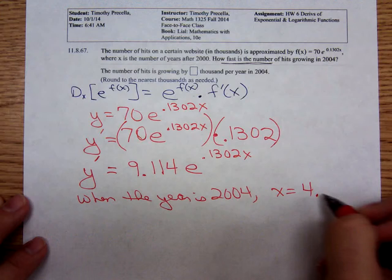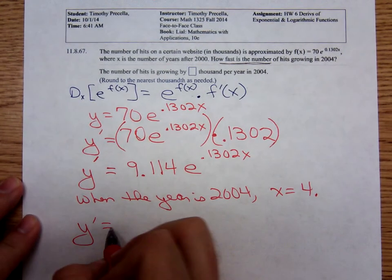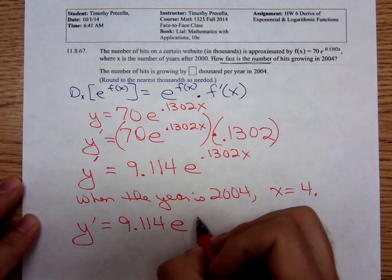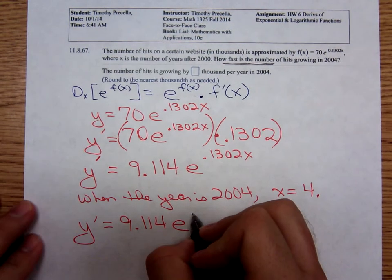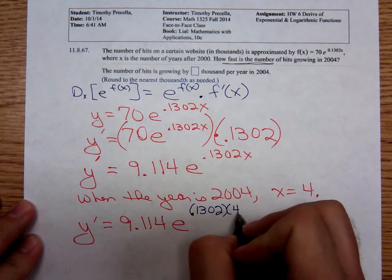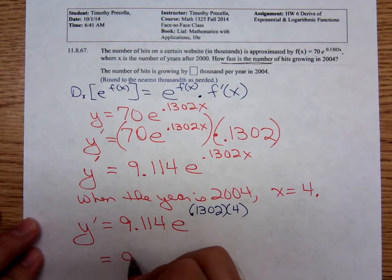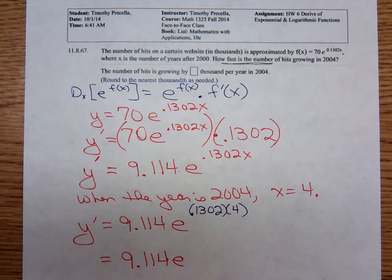Plugging in 4, we get y prime equals 9.114 times e. Be careful here. It's 0.1302 times 4. My advice to you, I know some people want to punch it all in one sequence of steps, and that's fine, provided you realize what you need to do with your calculator's order of operations.